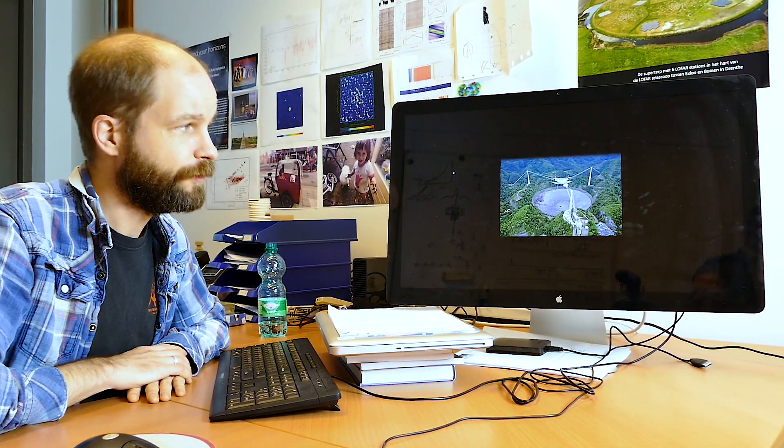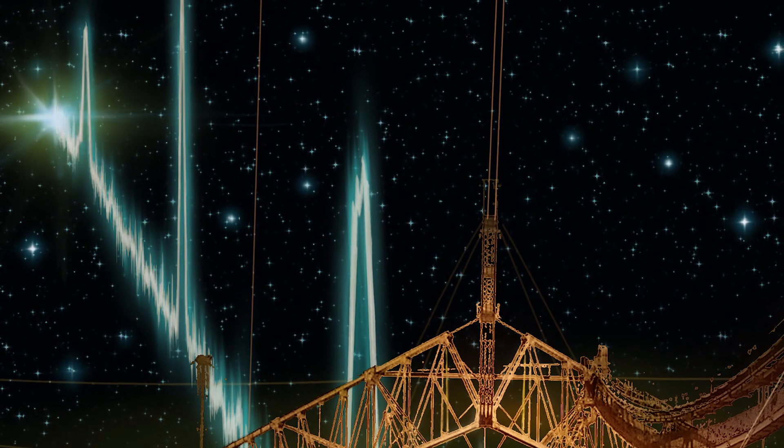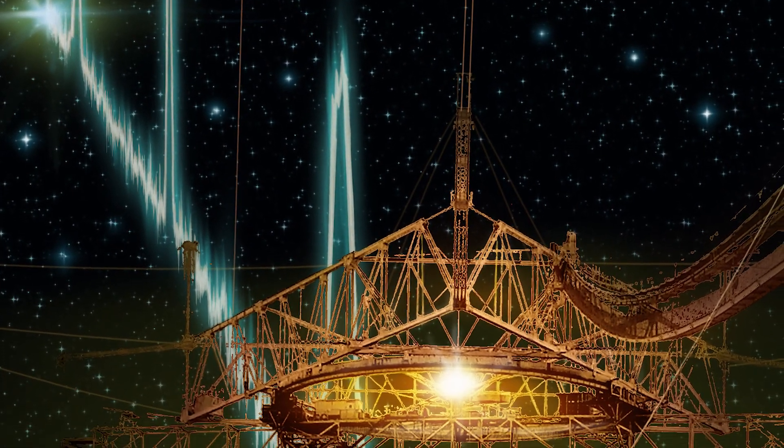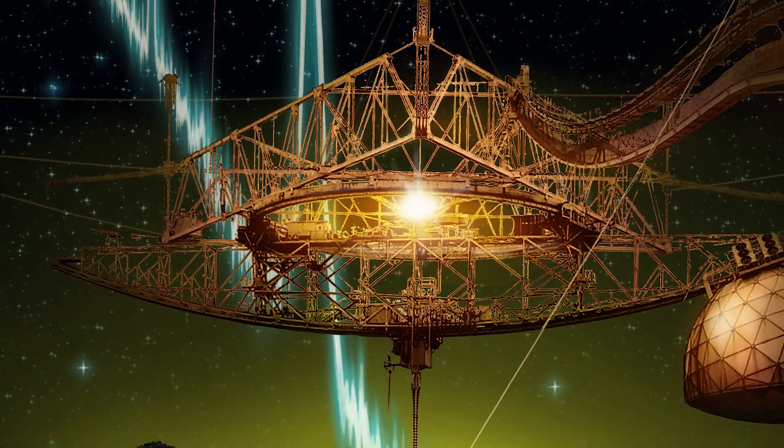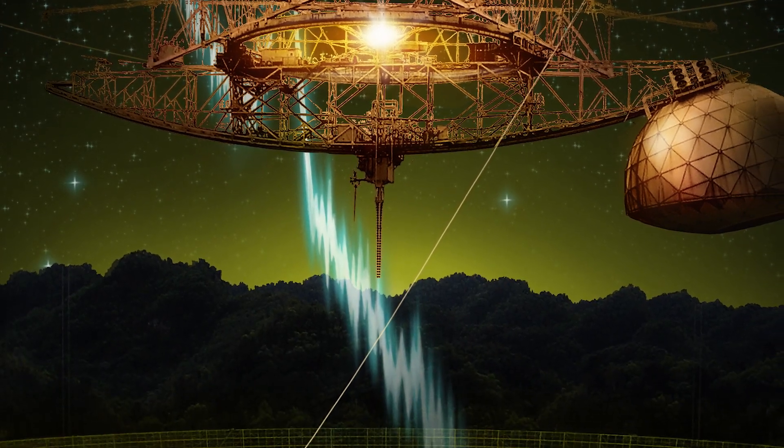We think they're coming from very deep in outer space. Recently we found a fast radio burst using the largest radio telescope on Earth, the Arecibo telescope in Puerto Rico. The big advantage is that with a much bigger telescope we can see much weaker signals. This has allowed us to not only find a fast radio burst with Arecibo,